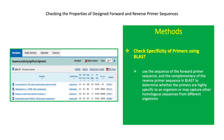Check the specificity of primers using BLAST. Use the sequence of the forward primer and the complementary of the reverse primer sequence in a BLAST search. This will determine whether the primer is highly specific to a specific gene or organism, or may capture other homologous sequences from different organisms.